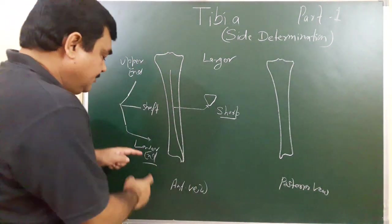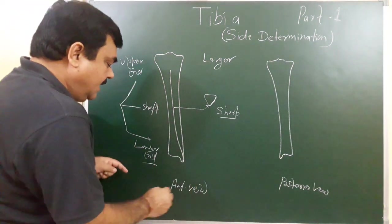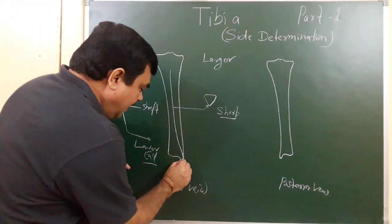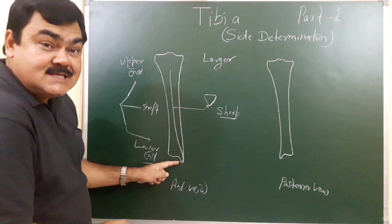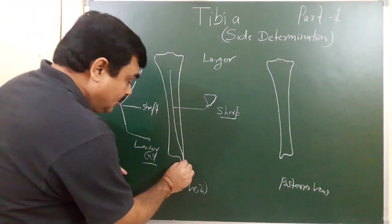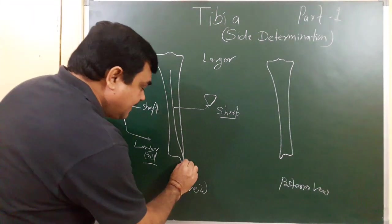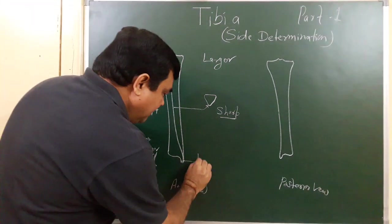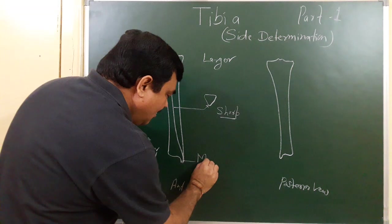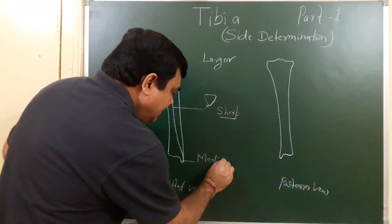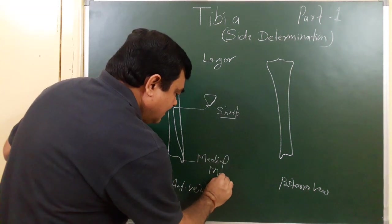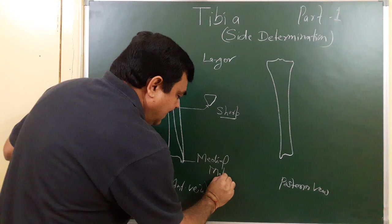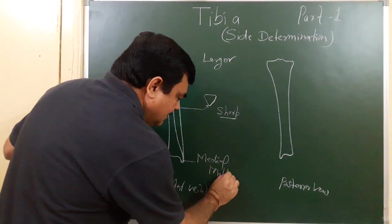Looking at the lower end, it has a projection on the medial side. This projection on the medial side is the medial malleolus.